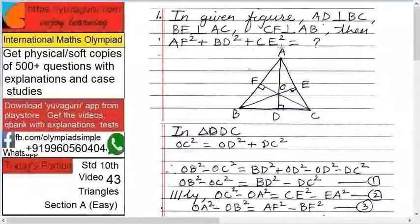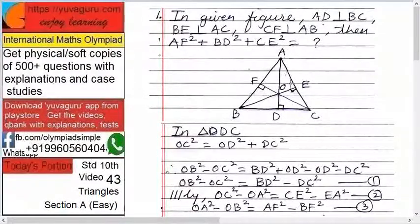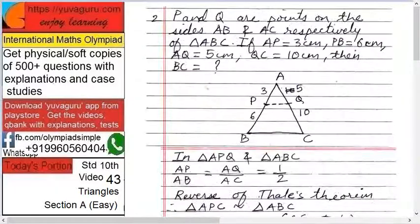Check this and write yourself again. Next, in the figure P and Q are points on the sides AB and AC respectively of triangle ABC.